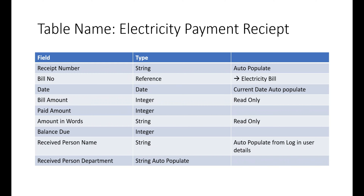Finally, another table: 'Electricity Payment Receipts'. As a consumer who received a bill and wants to pay after two or three days, this table handles payments. Receipt number is auto-populating as an acknowledgement number. Bill number is a reference field from the Electricity Bill table — selecting the bill number auto-populates the person's name, due date, bill amount, and any pending amounts.